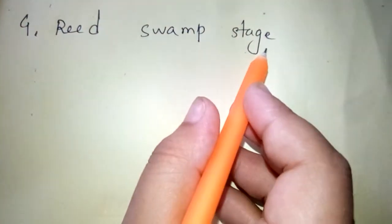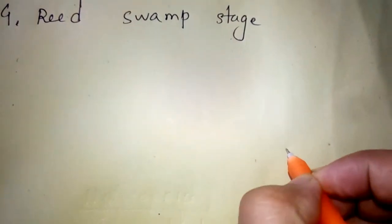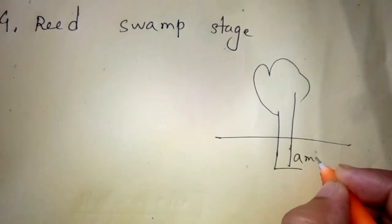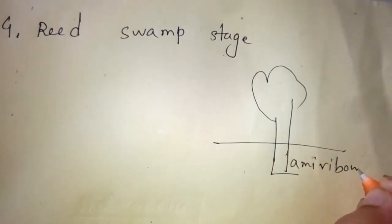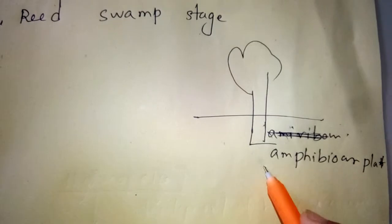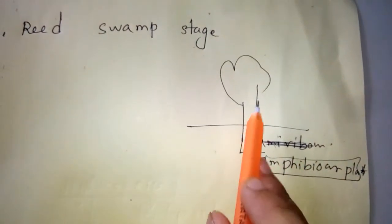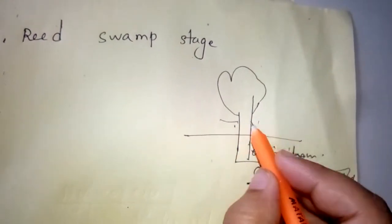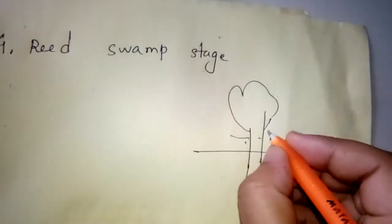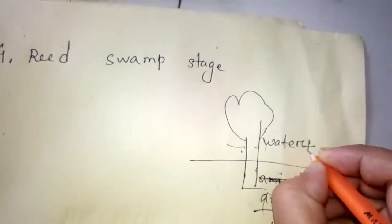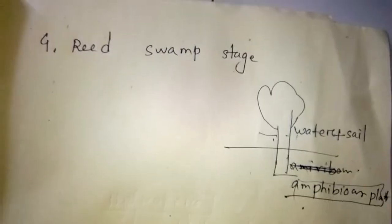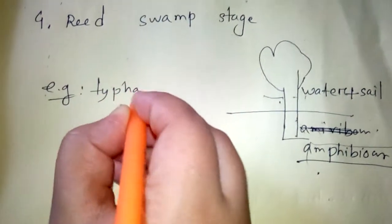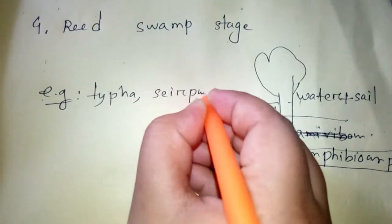Number four is reed swamp stage. In reed swamp stage, big plants grow in submerged water. They are amphibious plants, meaning they need both water and soil to survive or complete their life cycle. Examples of amphibious stage plants are Typha, Scirpus, etc.